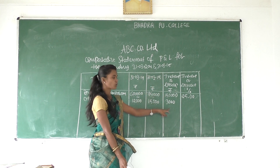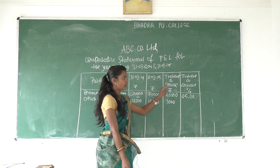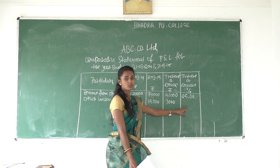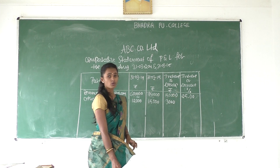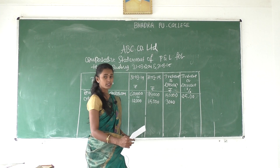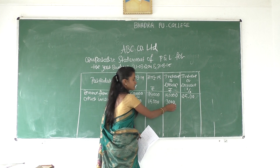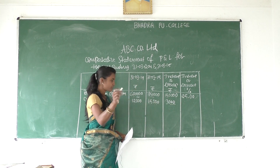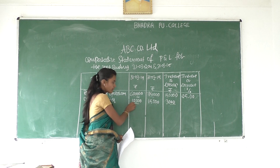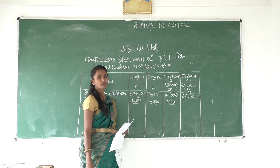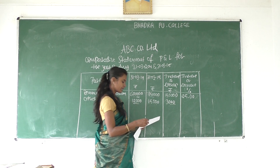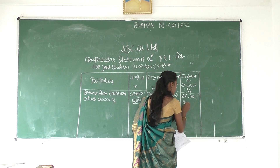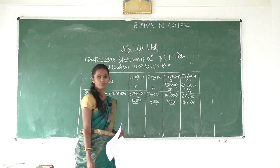This is what rupees are done. We need to find out the increase or decrease in percentage. To find out that amount, the calculation is: 3,000 divided by 12,000 into 100. You will get 25%, so 25.00.